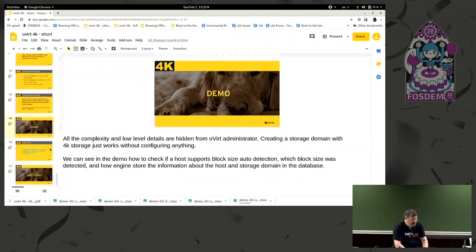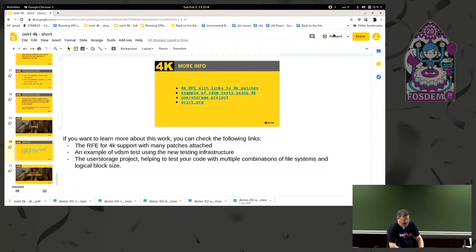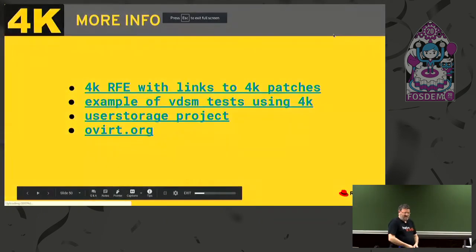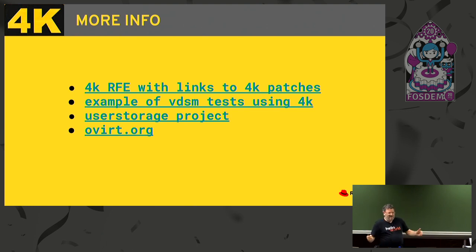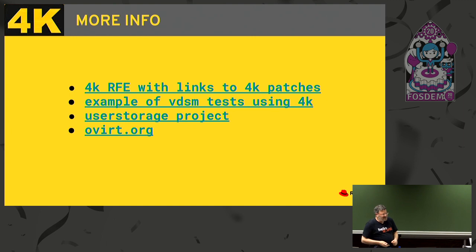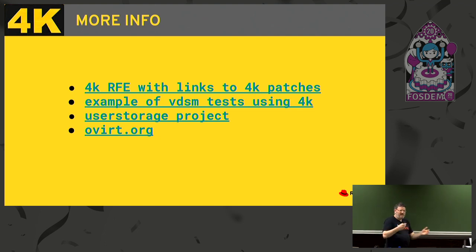So we have a GlusterFS domain, we can use it, create VMs, and start them. This part of the demo shows how we can check what engine knows about the storage: we see that the resource supports these values, and we can check the storage domain to confirm that engine recorded the value properly. If you want to learn more, you can check the linked resources: there's an RFE with many patches attached from the huge work during 4.3 development, an example of a VDSM test using all this infrastructure, and a link to the user-storage project, which is a helper for testing with many kinds of storage and block sizes.